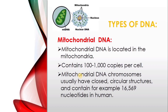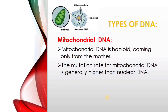The other type of DNA is mitochondrial DNA. Mitochondrial DNA is located in the mitochondria and contains 100 to 1000 copies per cell. Its chromosomes usually have a closed circular structure and contain, for example, 16,569 nucleotides in humans.